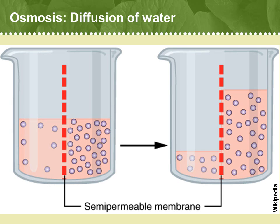Why? Think way back to a high school chemistry class in which you maybe studied osmosis, and imagine a plant cell struggling to absorb water. Osmosis is the principle that a solvent, such as water, will flow from an area of low concentrations of solutes, such as dissolved salts, into an area with higher concentrations of solutes. You know how water always finds its own level? The same principle applies in osmosis — water always finds an equal concentration.